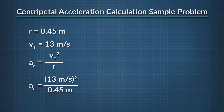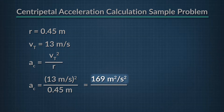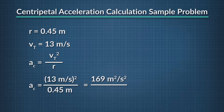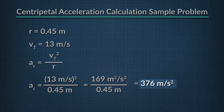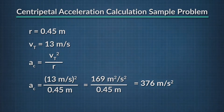Then we square the tangential velocity and get 169 meters squared per second squared. We then divide 169 meters squared per second squared by the radius, 0.45 meters, and we get 376 meters per second squared. That's the centripetal acceleration of the phone as it moves in a circular path.